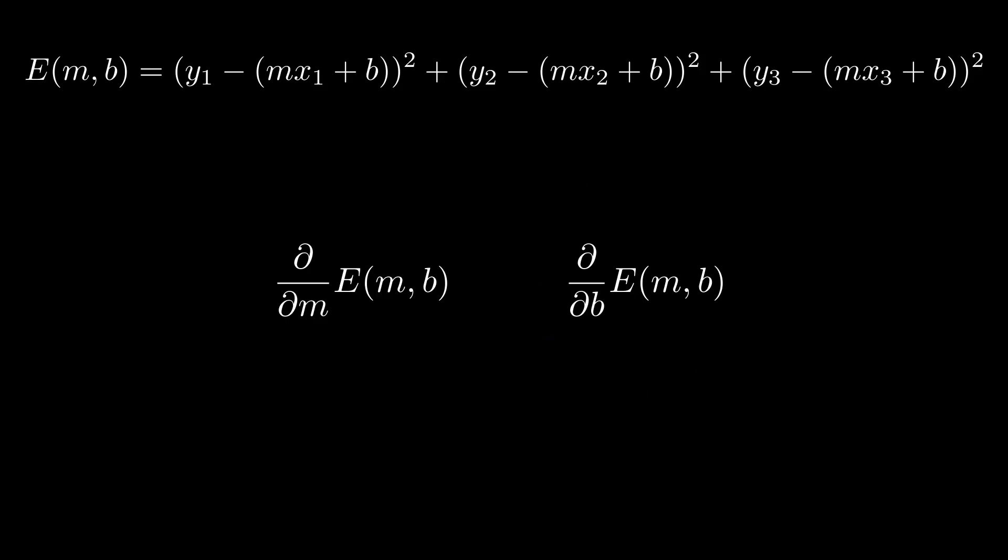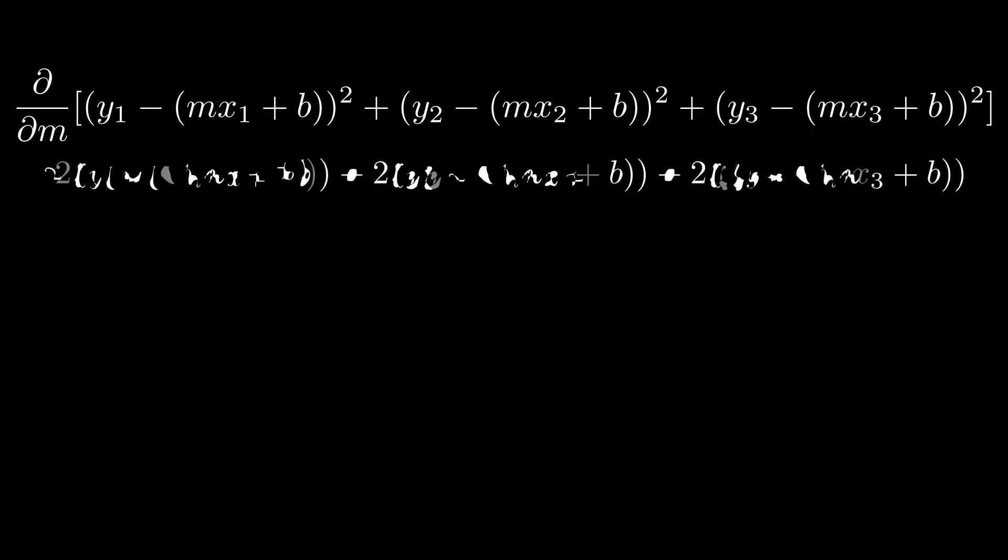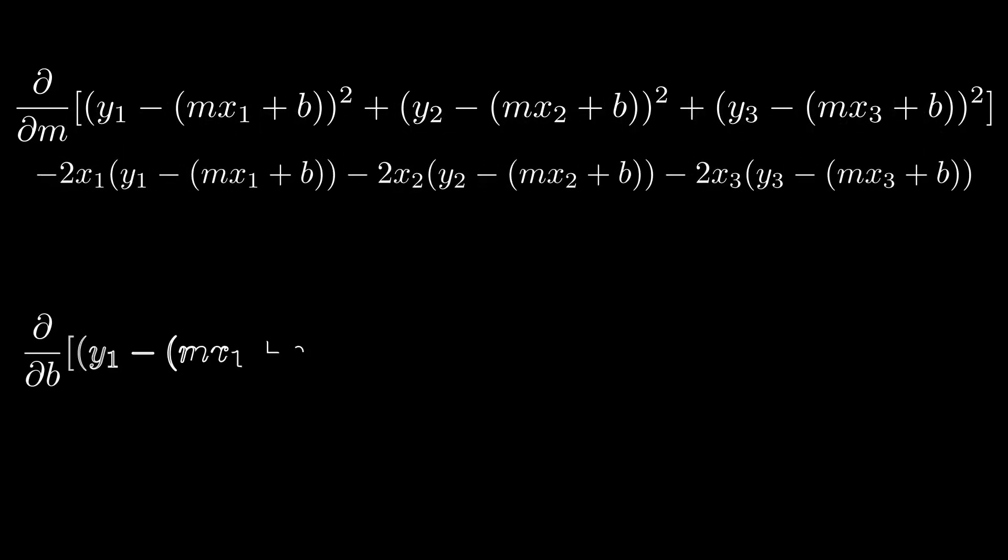The way that partial derivatives work is that the variables that are not being differentiated to are treated as constants. In other words, partial derivatives tell us how does the function change when changing this variable and not any others. Also, partial derivatives are usually written with the symbol del instead of d with normal derivatives. In the case of our error function, let's take the partial derivative with respect to m first by using the power rule and the chain rule. Now let's take the partial derivative with respect to b, which again uses the power rule and the chain rule.